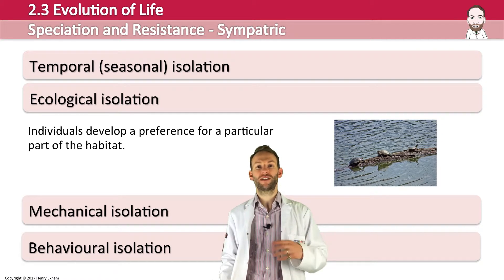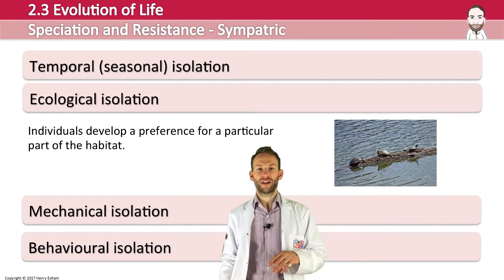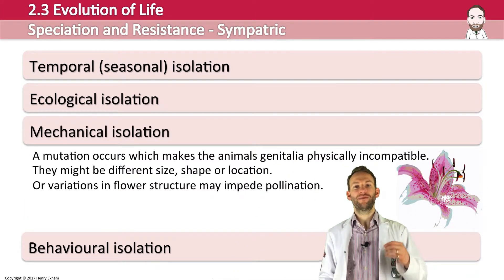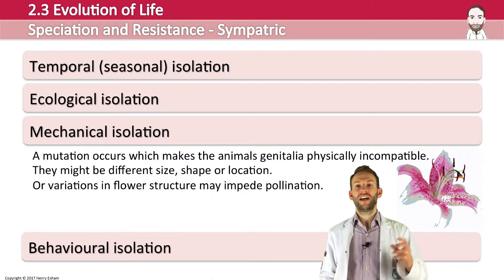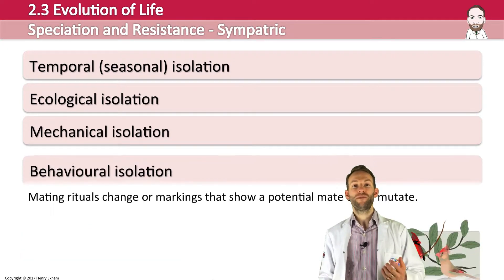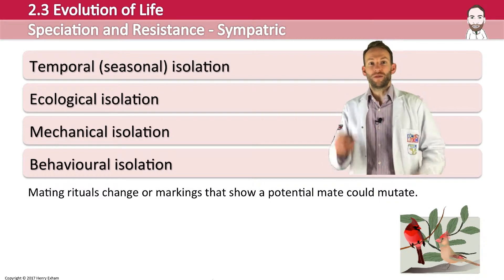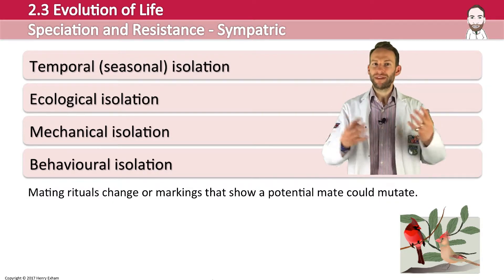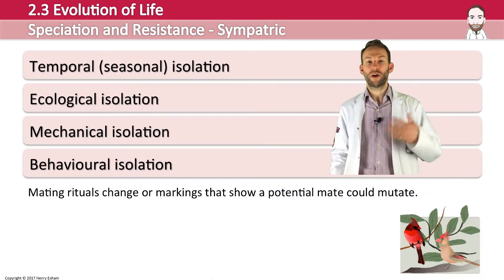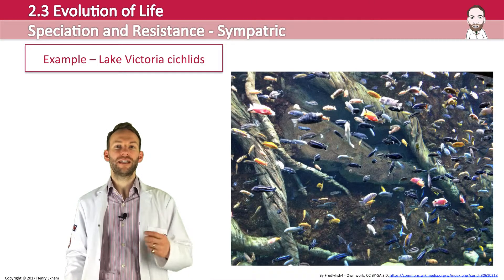Ecological isolation is when individuals develop a preference for a particular part of a habitat and therefore don't mix anymore — there's no physical geographical barrier, they just prefer one area to another. Mechanical isolation is when a mutation occurs making animal genitalia physically incompatible, or variations in flower structure impede pollination. Behavioral isolation occurs when mating rituals are very specific — if one bird has a different mating ritual, they may not recognize each other and won't mate.